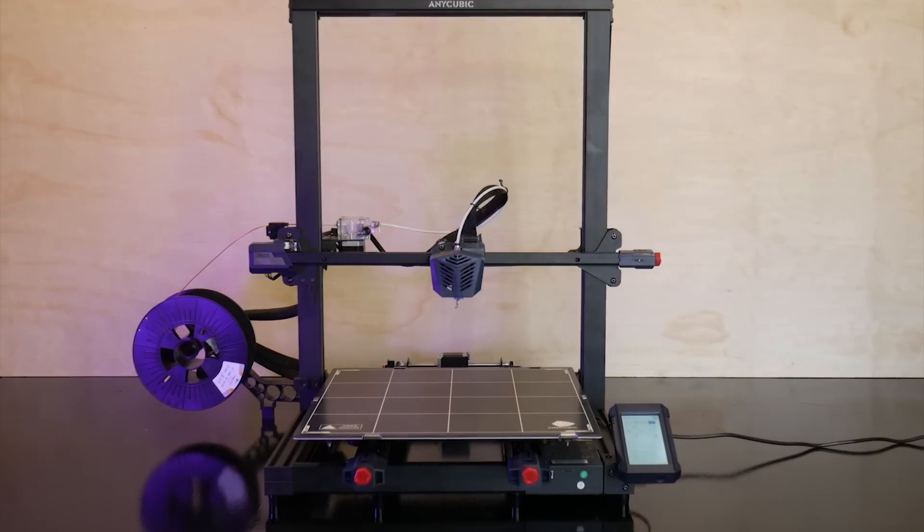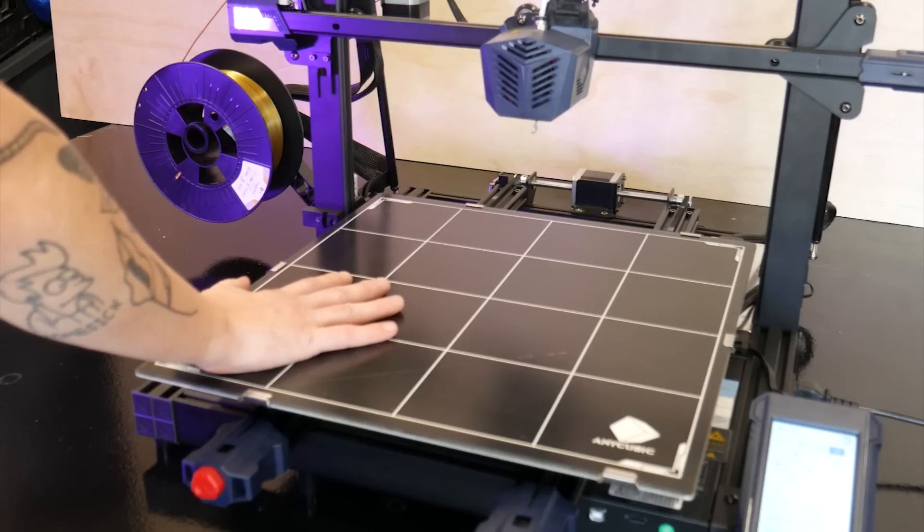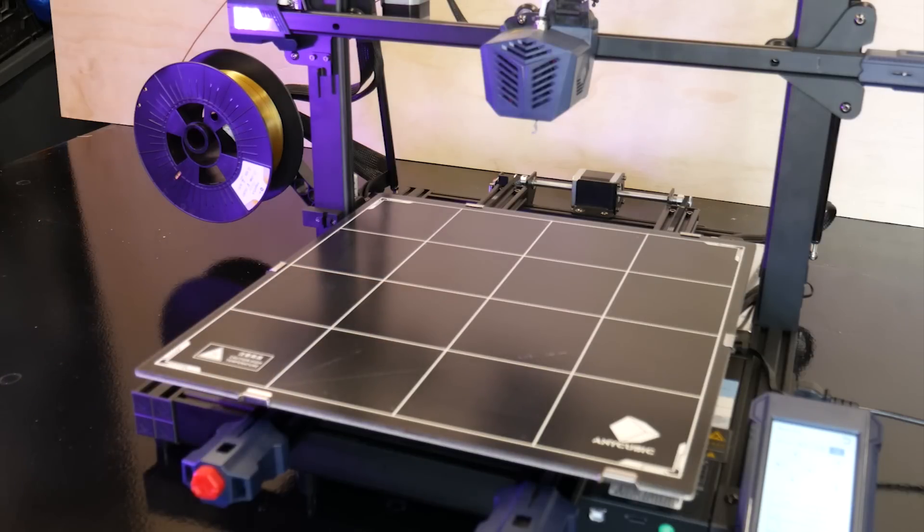This is the Anycubic Cobra Max. It's a gigantic FDM printer with a build volume of 400 by 400 on the X and Y and 450 on the Z-axis.